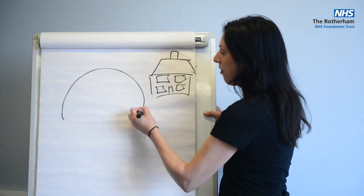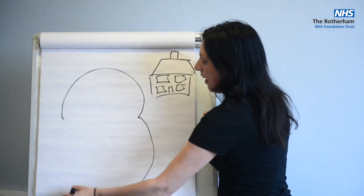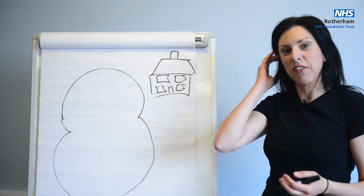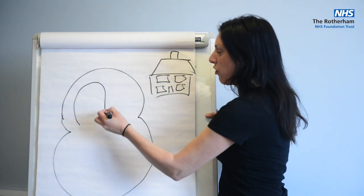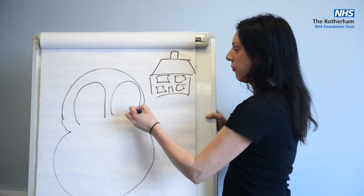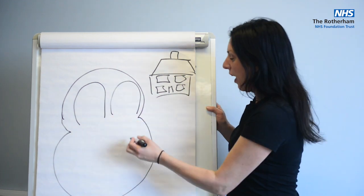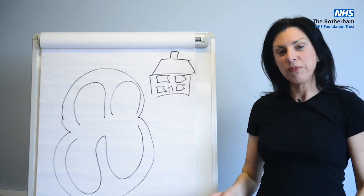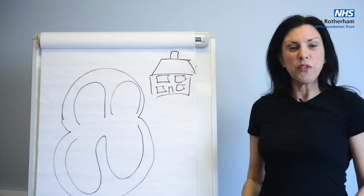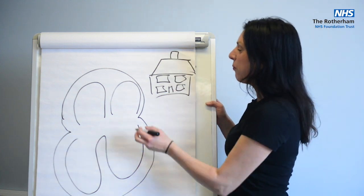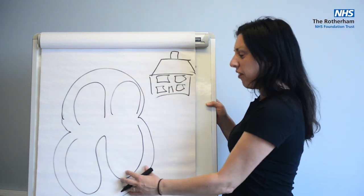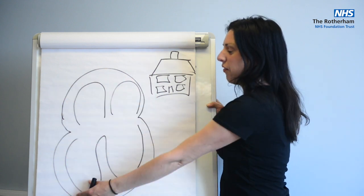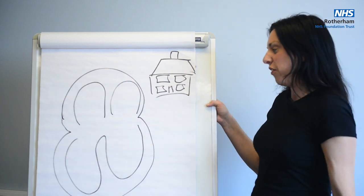The heart is a hollow organ and it has four chambers: two chambers at the top — those are the two bedrooms — and two chambers at the bottom, the bottom rooms. This is the left side on the right side of the paper, and this is the right side.